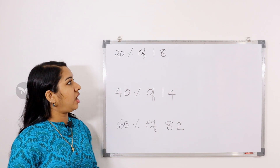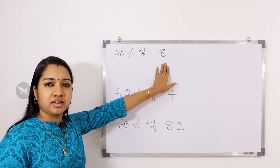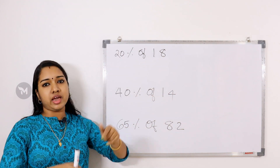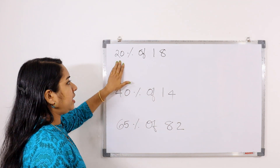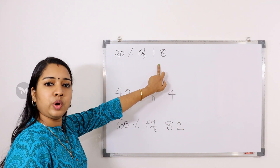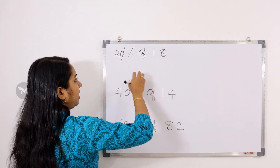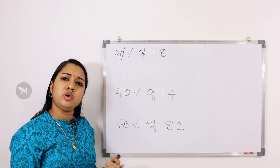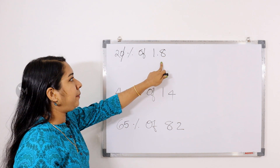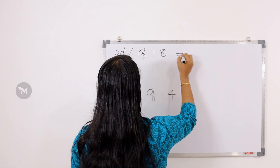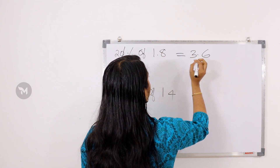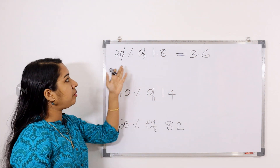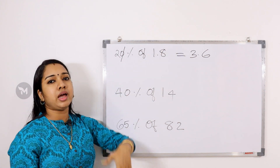If we say 20% of 80, we multiply and cancel zeros. But if the number is 1.8 — there is a decimal point here. Then 2 into 1.8: 2 into 18 is 36, and there is a decimal point, giving 3.6. We multiply 1.8 by 20 divided by 100.